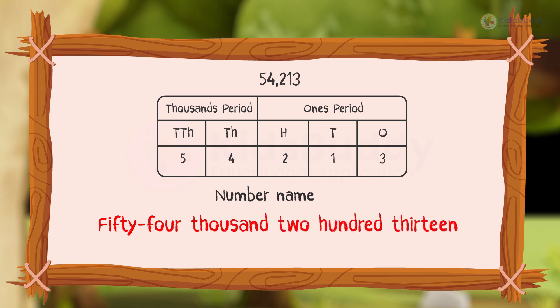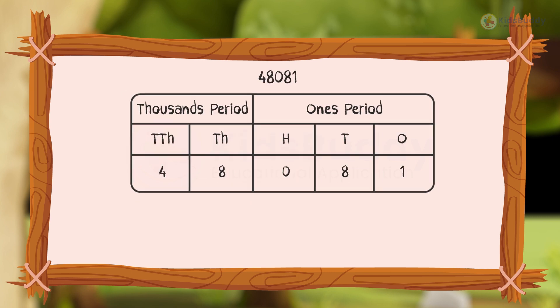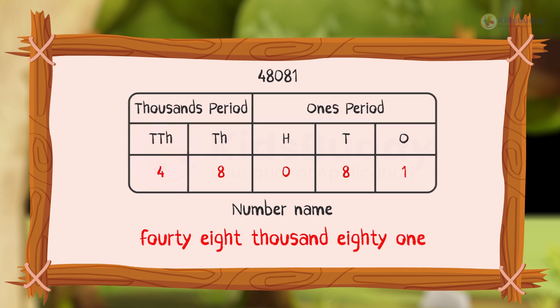Wasn't it easy reading 5-digit numbers? Let us try one more. Look at this number. We read it as 48,081. We do not read 0 hundreds.